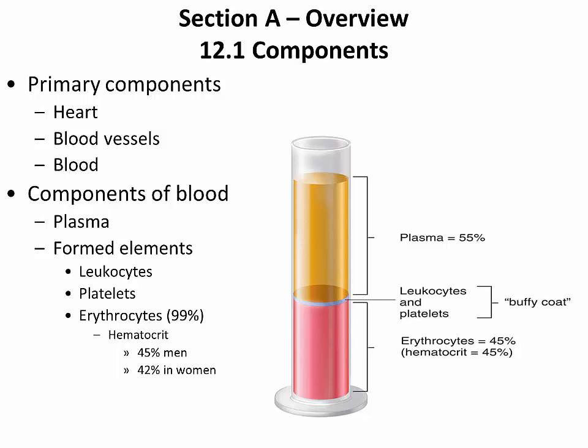There are three types of formed elements. We have leukocytes, the various types of white blood cells. We have platelets, involved in blood clotting, formed from a megakaryocyte that fractures into very small pieces. And then we have erythrocytes, which are red blood cells. By far, the most common formed element is the erythrocyte — 99% of formed elements are erythrocytes.